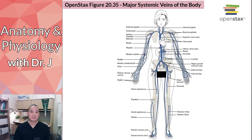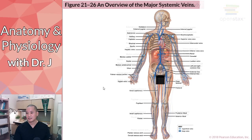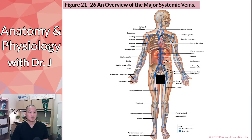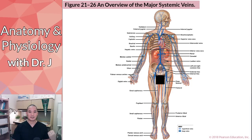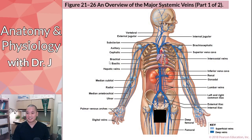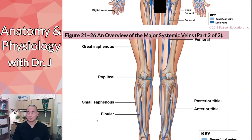Here are the systemic veins — these two images are a good place to start. I can't test you on every vein in the body; that's a lot. At this level, we focus on the major ones that are easy to identify. The closer a vessel is to the heart, the more likely I am to test on it, since those carry a lot of blood.